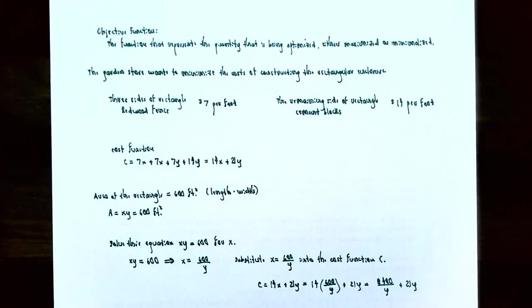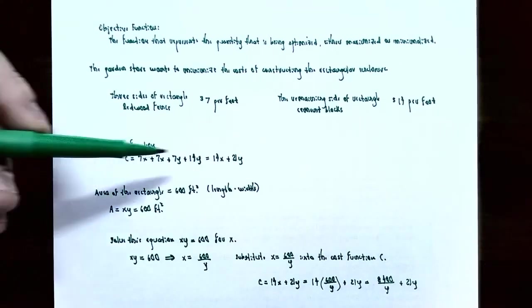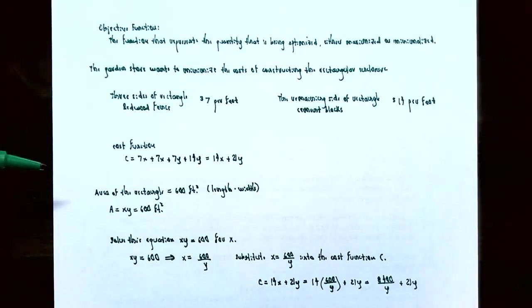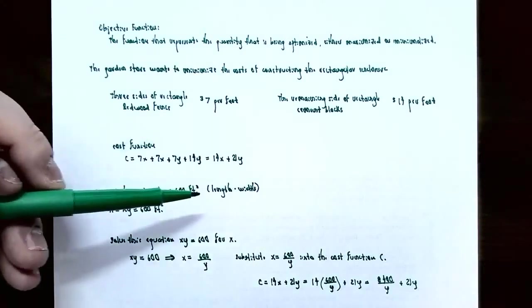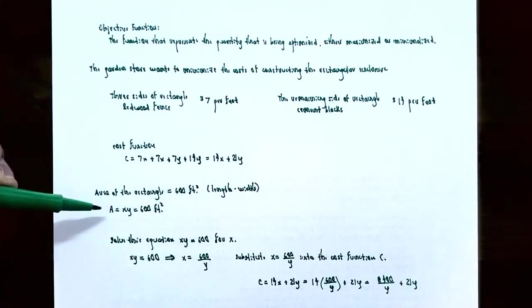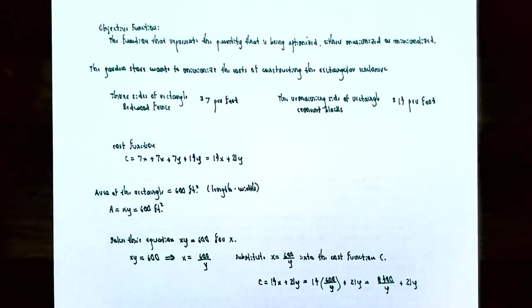We need some other information to replace x or y, because to find an absolute maximum or minimum we need only one variable. We were told the area of the enclosure is 600 square feet. Area equals length times width, so x times y equals 600. Taking this equation and solving for x: divide both sides by y, giving x equals 600 divided by y.